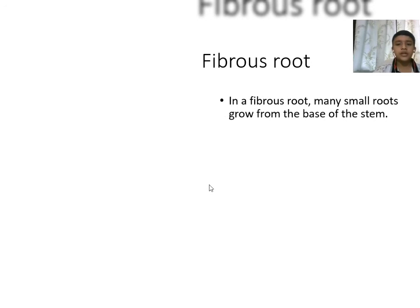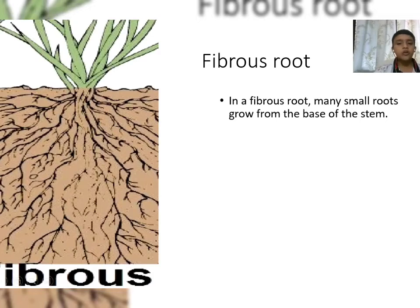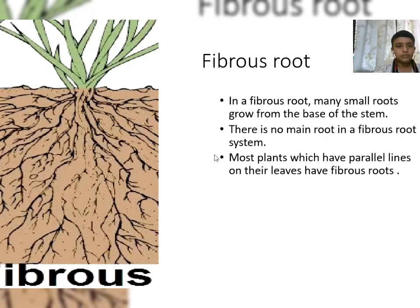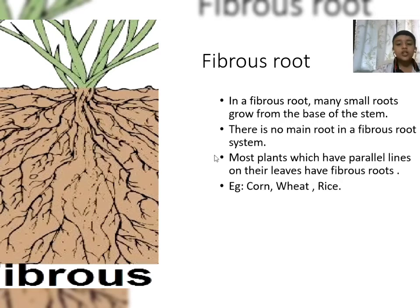Fibrous root: in a fibrous root, many small roots grow from the base of the stem. There is no main root in a fibrous root system. Most plants which have parallel lines on their leaves have fibrous roots. Examples: corn, wheat and rice.